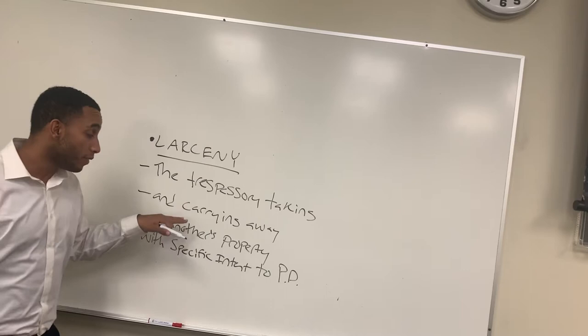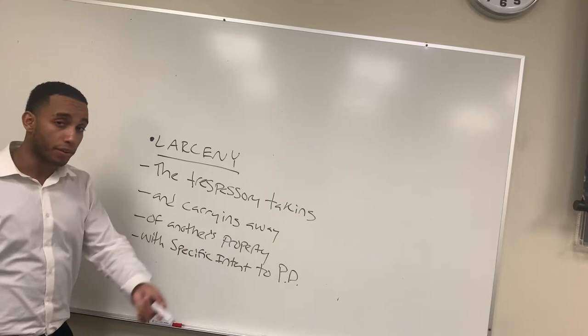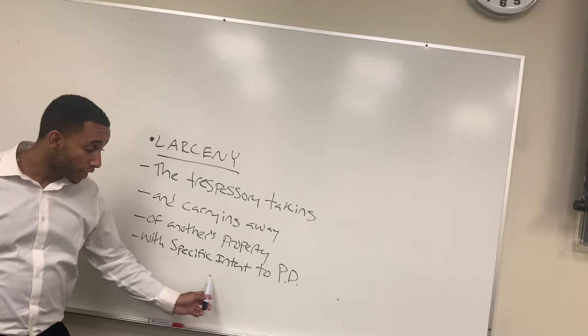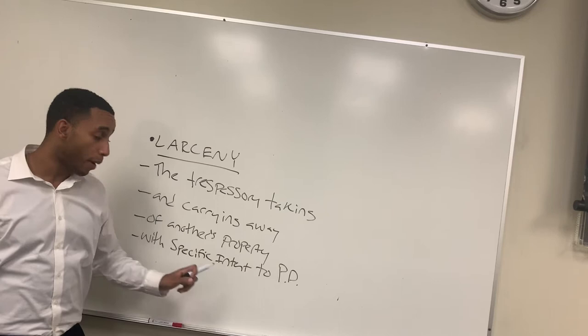The third element, property of another, is pretty self-explanatory. The property does not belong to the defendant; the defendant purposely took the property of another. The last element, specific intent to permanently deprive, means the defendant had the intent within his or her mind to permanently deprive the other person of that property that belongs to them.